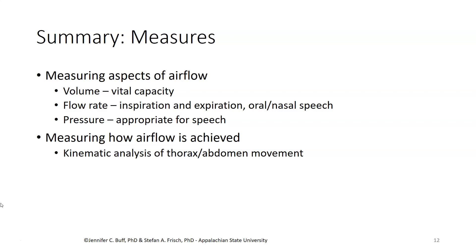In summary, we can measure a variety of aspects of airflow related to respiration. We can look at what kind of volumes we have for respiration, such as with the vital capacity. We can look at the flow rate during either inspiration or expiration, related to either oral or nasal parts of speech. We can look at pressures as to whether they're appropriate for speech. And we can look at how that airflow is achieved — for example, by kinematic analysis comparing movement in the thorax versus movement in the abdomen during respiration. Each of these different measures may be useful in pointing toward different respiratory or phonatory problems in speech production.